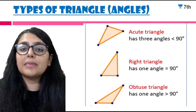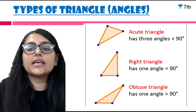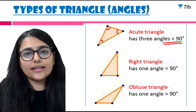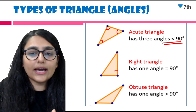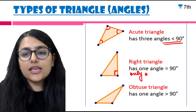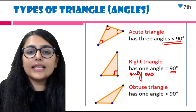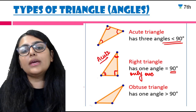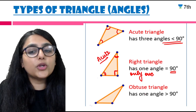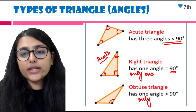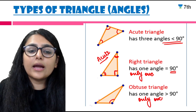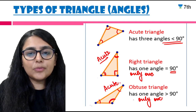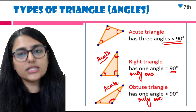Now, types of triangles on the basis of angles. First, an acute triangle — all three angles have a measure less than 90 degrees. Then we have a right triangle, in which only one angle is equal to 90 degrees; the remaining two angles will be acute. Finally, an obtuse triangle — only one angle is greater than 90 degrees, and the remaining two angles will also be acute. The name 'obtuse triangle' comes from the obtuse angle it contains.